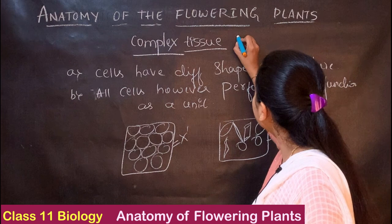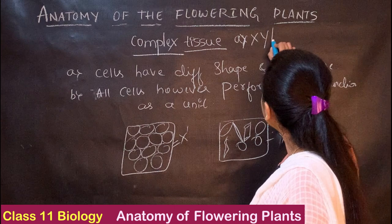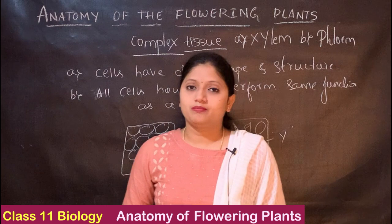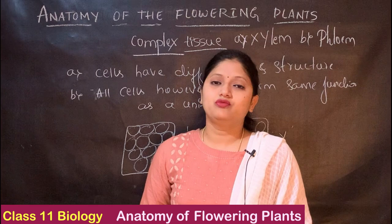We have two important complex permanent tissues. The first one is xylem and the second one is phloem. Xylem and phloem are the two complex tissues we are going to study in this video.